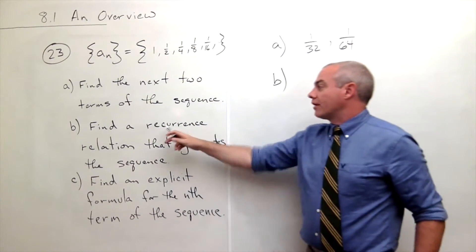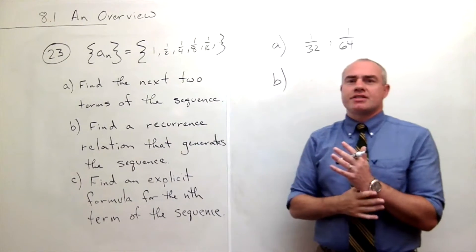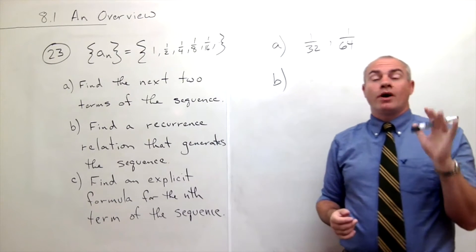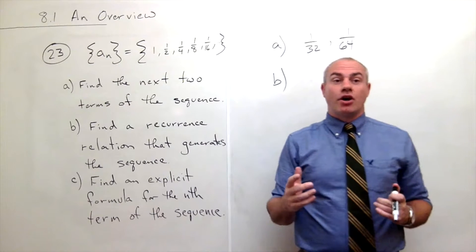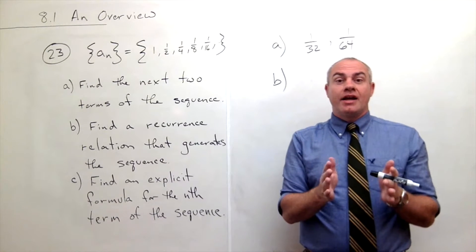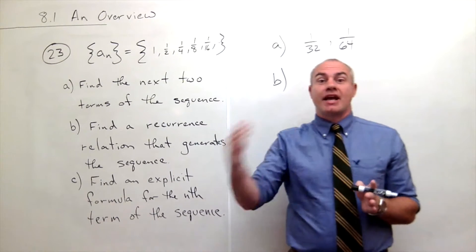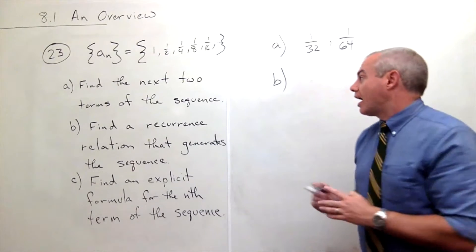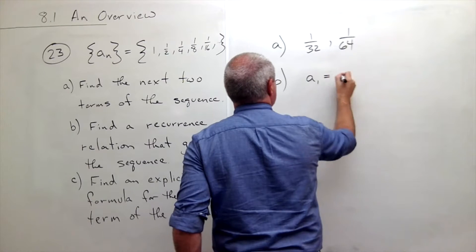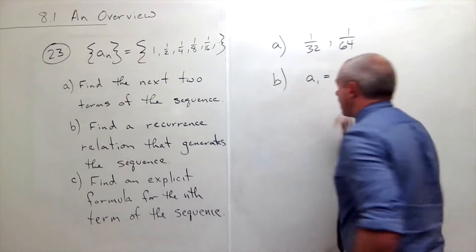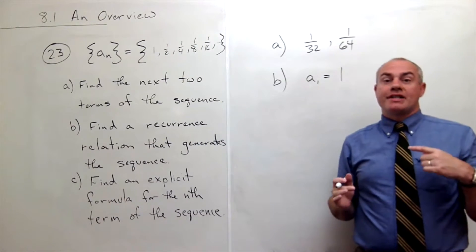What we need to have a recurrence relation for a sequence is we need to know what's the first guy, and then how do I get to the next guy? I know what the first guy is. a sub one is just one. So the first guy is one.